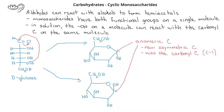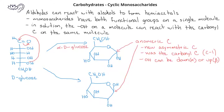Comparing these two cyclic monosaccharides, we see that in one form the hydroxyl group points down, and in the other form the hydroxyl group points up. We designate the form with the hydroxyl group on the anomeric carbon pointing down as alpha-D-glucose, and the form with the hydroxyl group pointing up as beta-D-glucose.